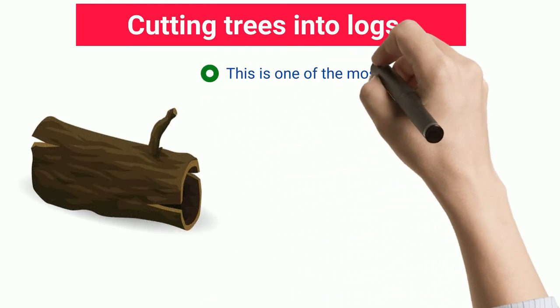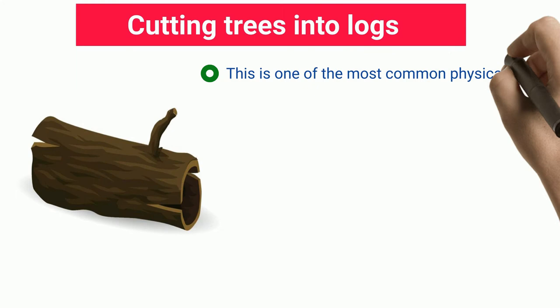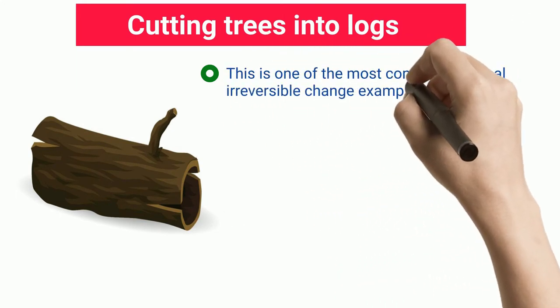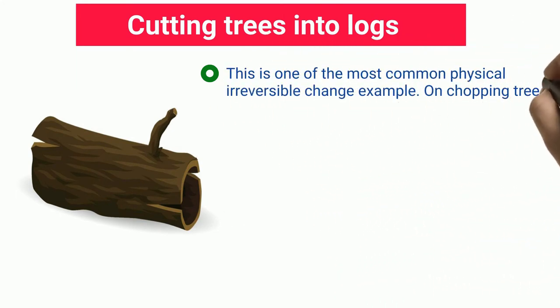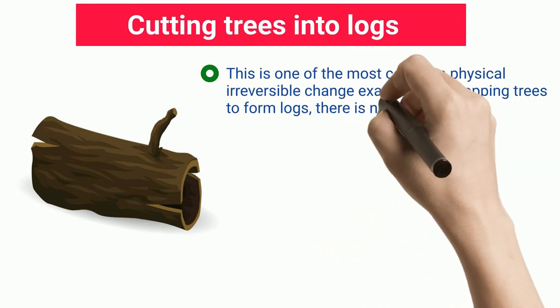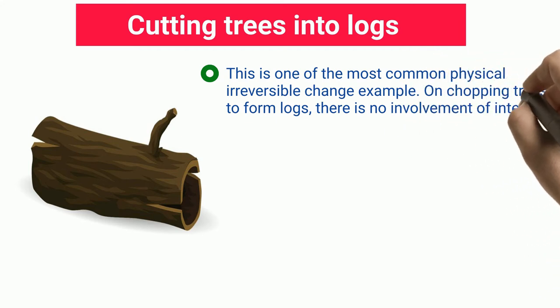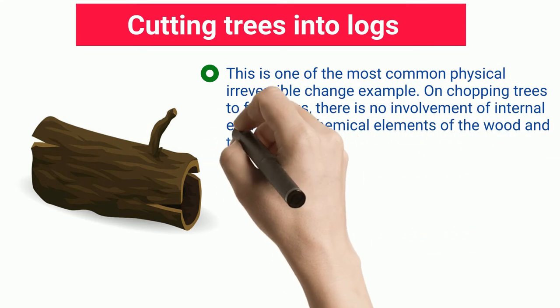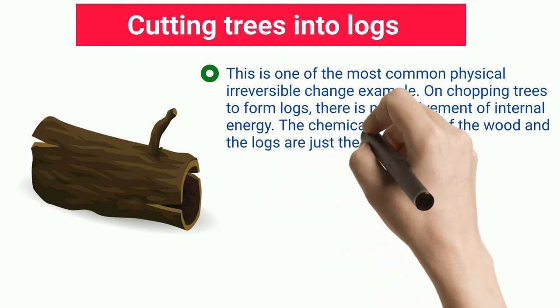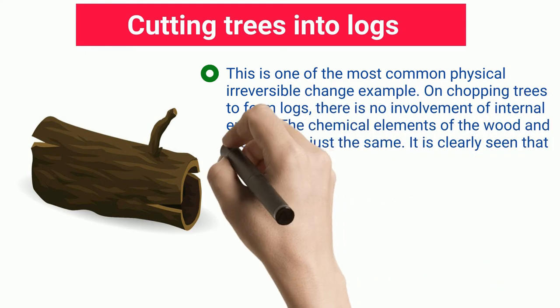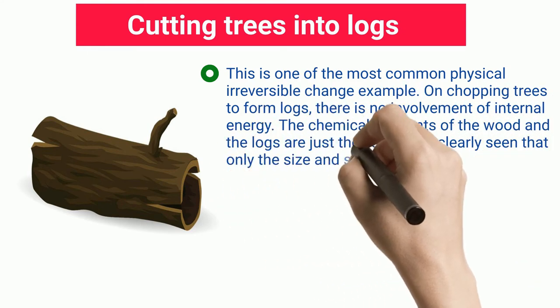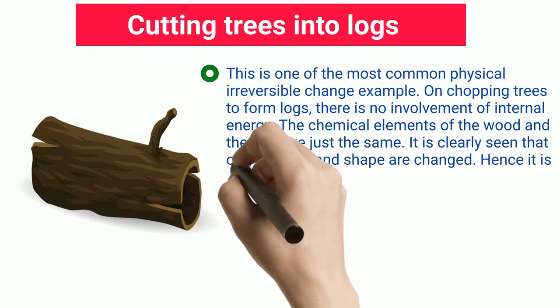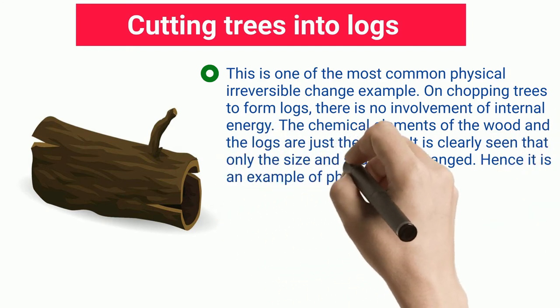Cutting trees into logs. This is one of the most common physical irreversible change examples. On chopping trees to form logs, there is no involvement of internal energy. The chemical elements of the wood and the logs are just the same. It is clearly seen that only the size and shape are changed. Hence it is an example of physical change.